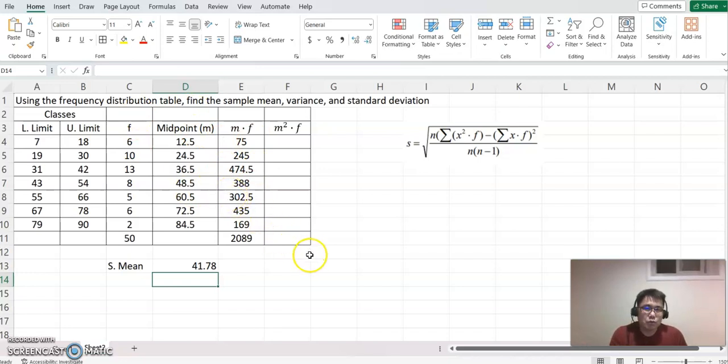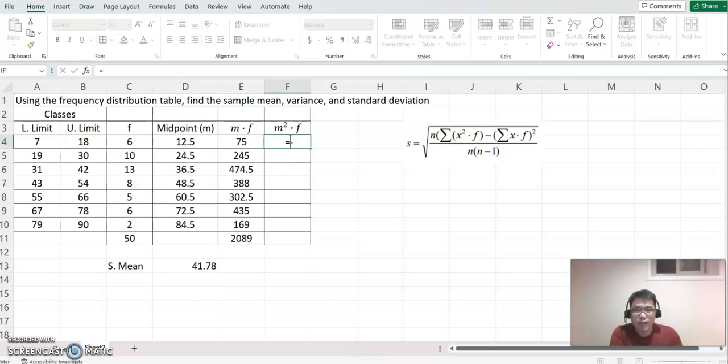We want to find out midpoint squared times f first. I'm going to click that: midpoint, and then shift key and number six for the power key, then the number two, and then multiply by frequency.